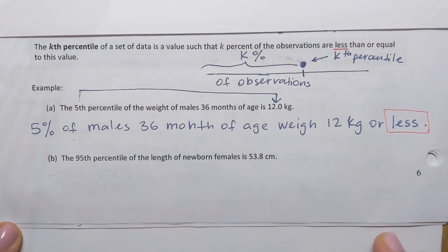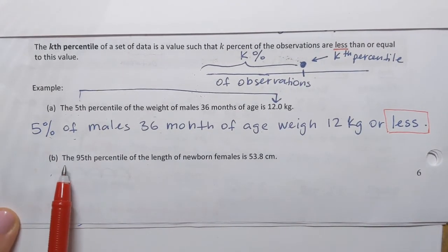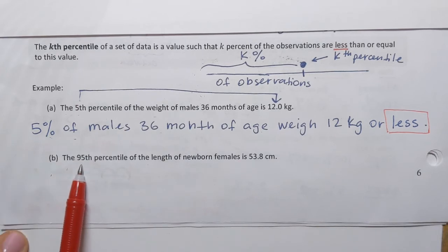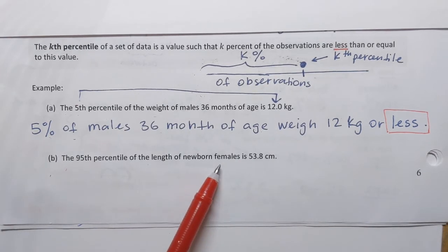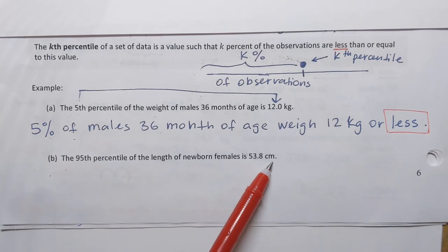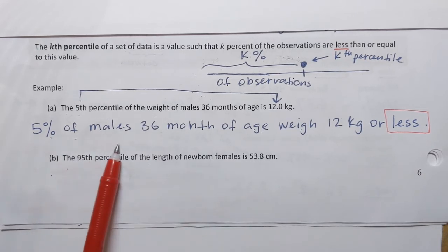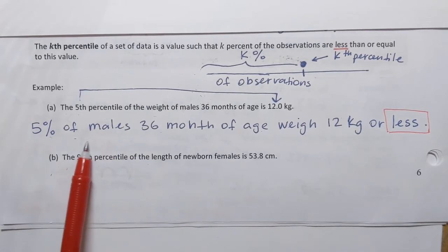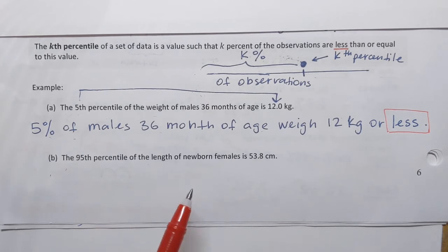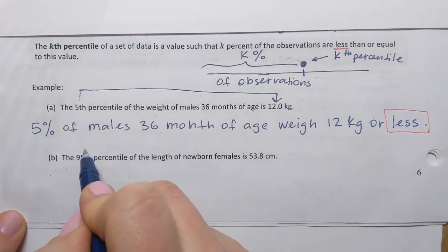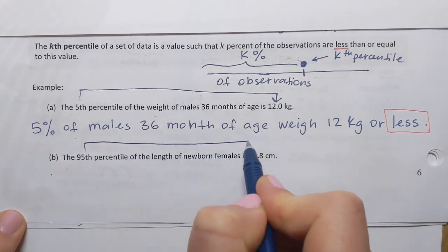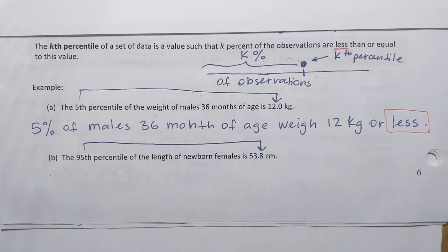Let's try it one more time. This time it says the 95th percentile of the length of newborn females is 53.8 centimeters. So 95th percentile, that's the measure of position of the specific data value. The data value is here, 53.8 centimeters. So that 95th percentile corresponds to or describes or measures a position of this data value, 53.8 centimeters.